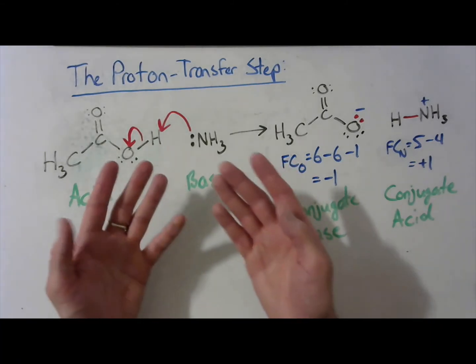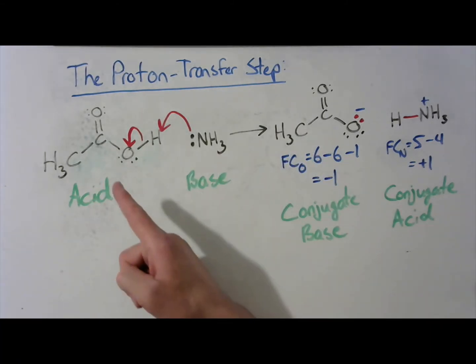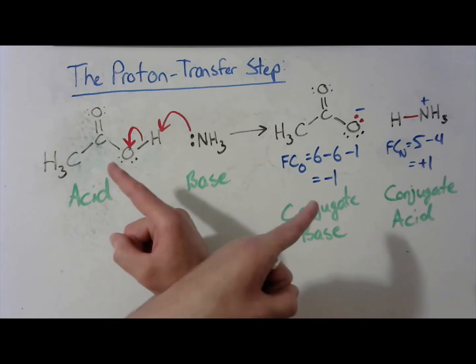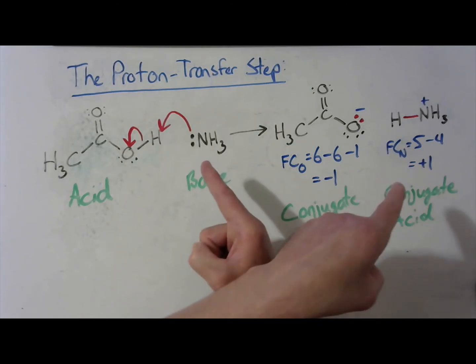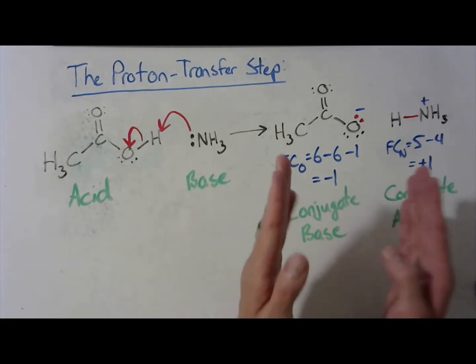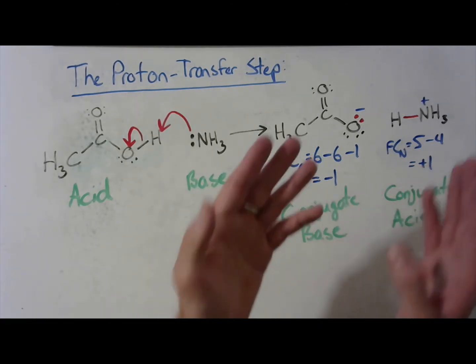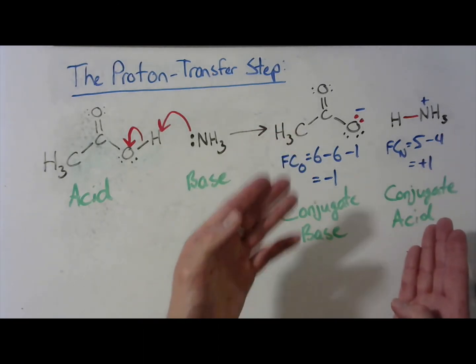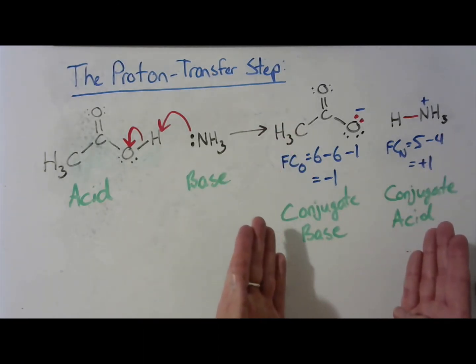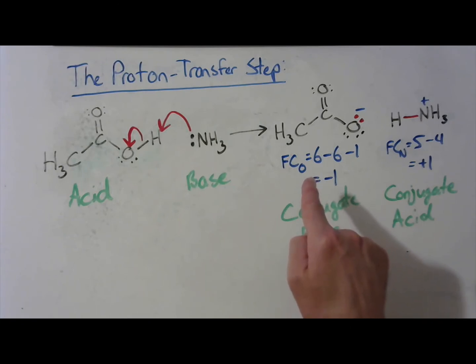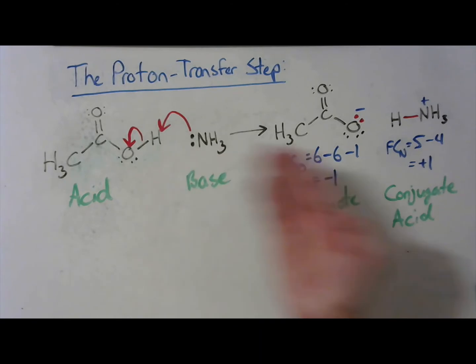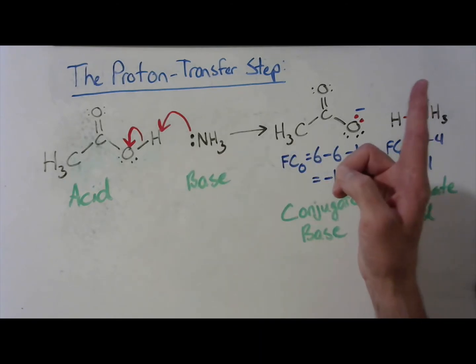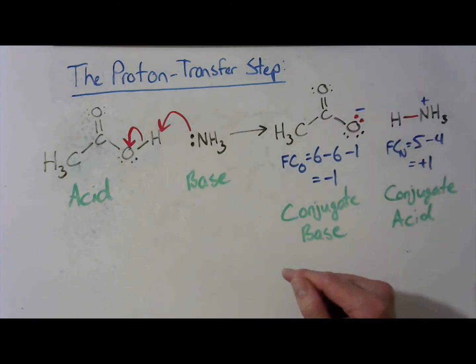In a proton transfer step, the acid is always converted into a conjugate base. And the base is always converted into a conjugate acid. Now, on this side of the equation, we have an acid component, and we have a base component. So, this base could steal an acidic proton from this acid. That makes this overall reaction an equilibrium.